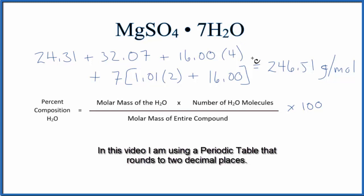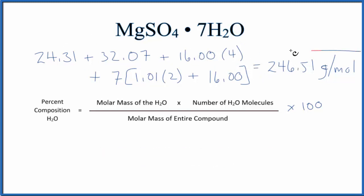Then for the seven water molecules, add that together. When we do that, we end up with the molar mass for the entire compound. This whole compound here is 246.51 grams per mole.